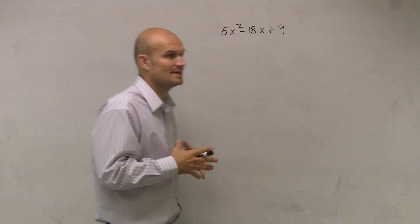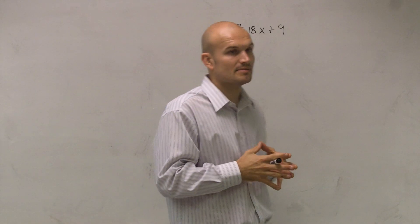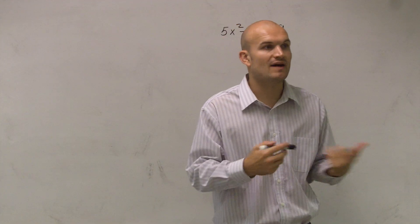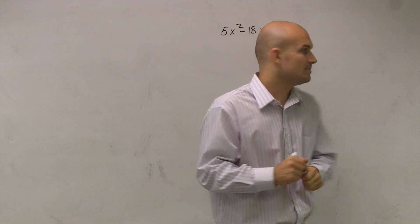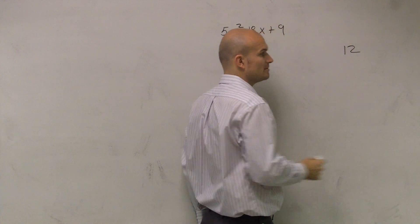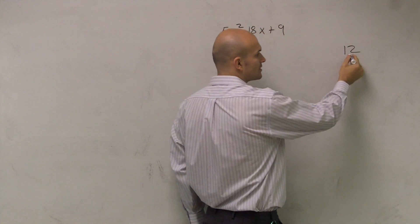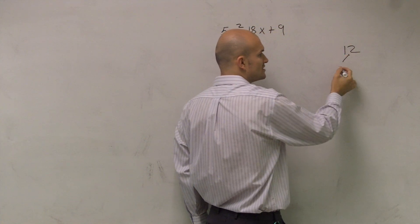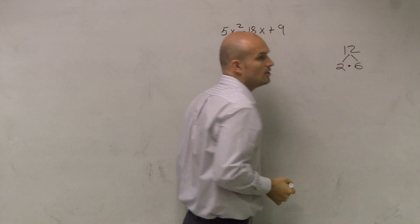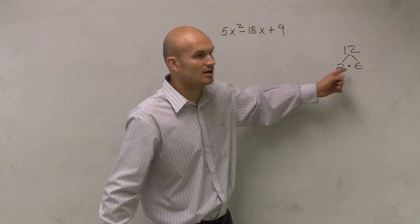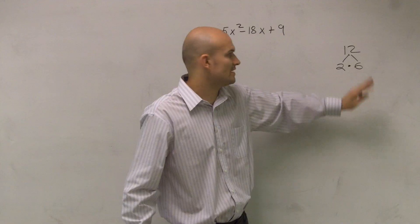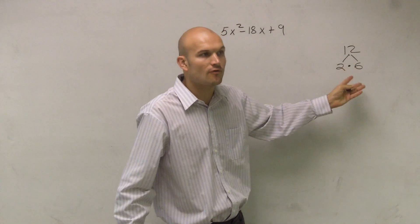The easiest way to write something as a multiplication problem is to look at it and see: can you divide an even number out of it? For example, if I say write 12 as a multiplication, 2 divides into 12, so 2 times 6 — that is a factor form of 12. It's not prime factorization, but that's a factor form of 12.